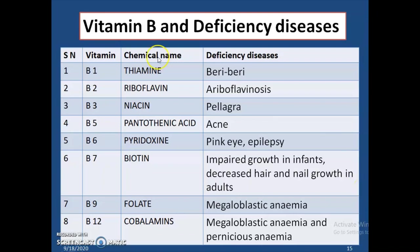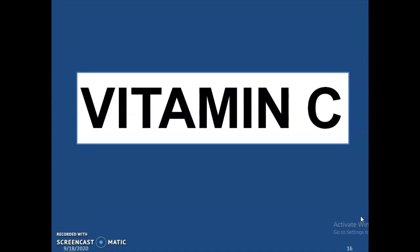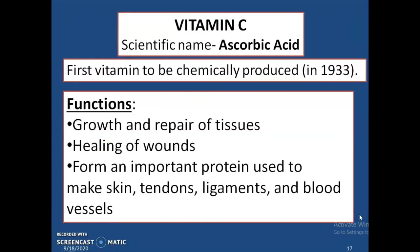Deficiency of vitamin B1 causes beriberi. Deficiency of vitamin B2 causes ariboflavinosis. Deficiency of vitamin B3 causes pellagra. Deficiency of vitamin B5 causes acne. Deficiency of vitamin B6 causes pink eye and epilepsy. Deficiency of vitamin B7 causes impaired growth in infants and decreased hair and nail growth in adults. Deficiency of vitamin B9 causes megaloblastic anemia. Deficiency of vitamin B12 causes megaloblastic anemia and pernicious anemia.